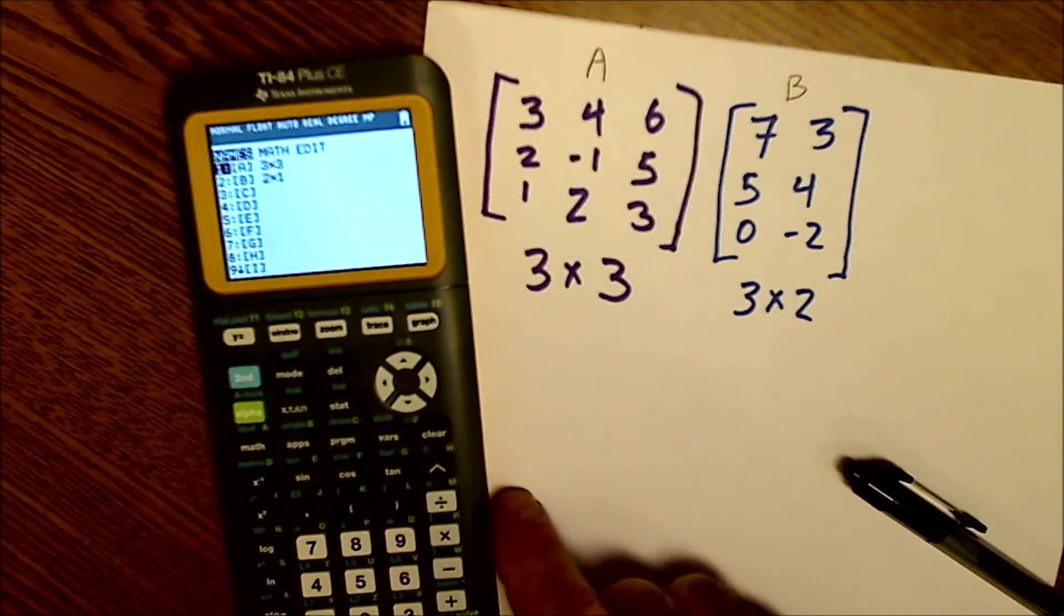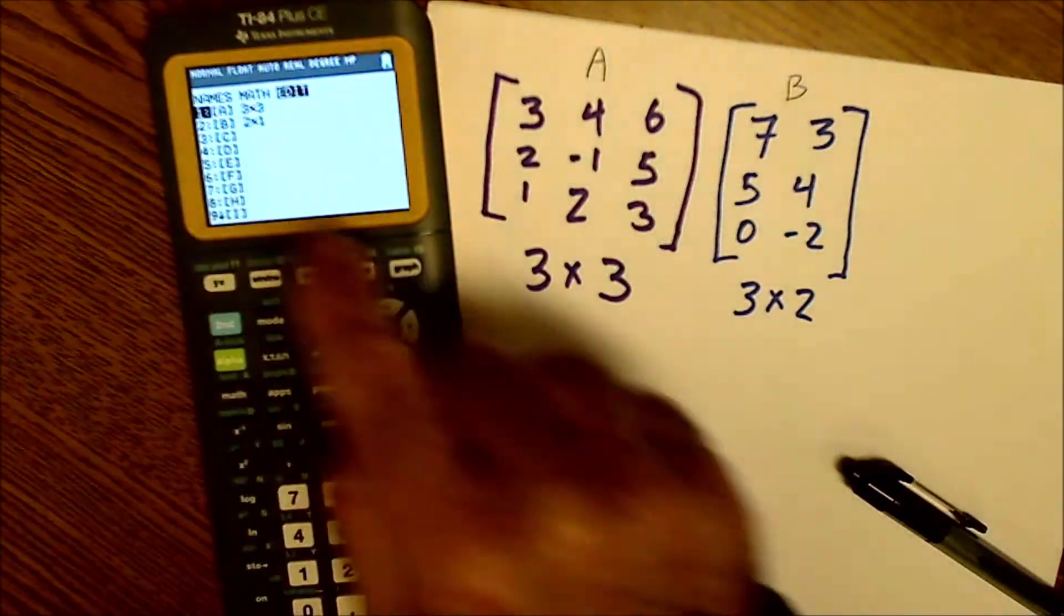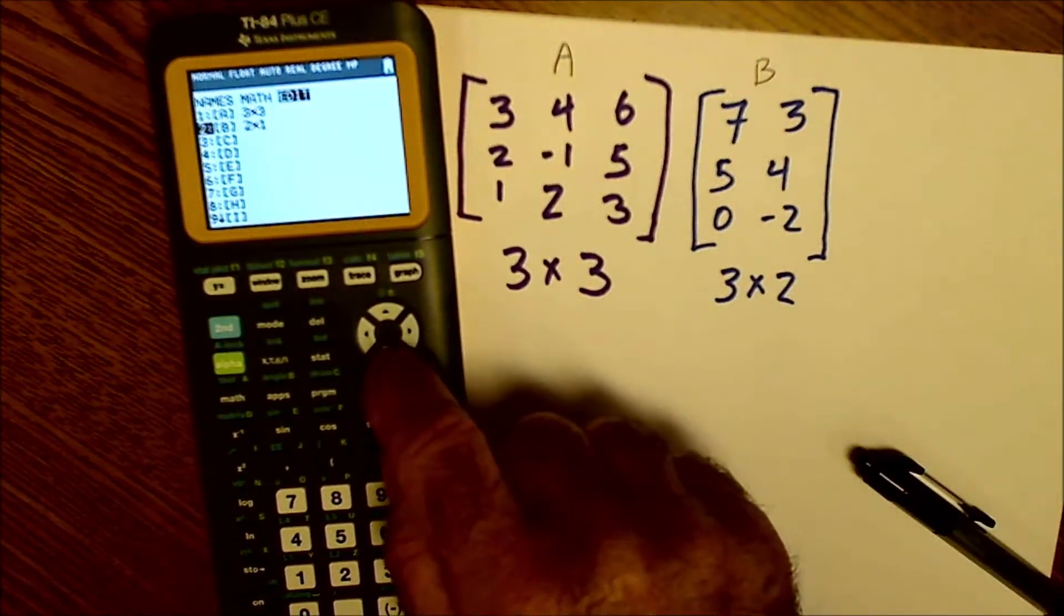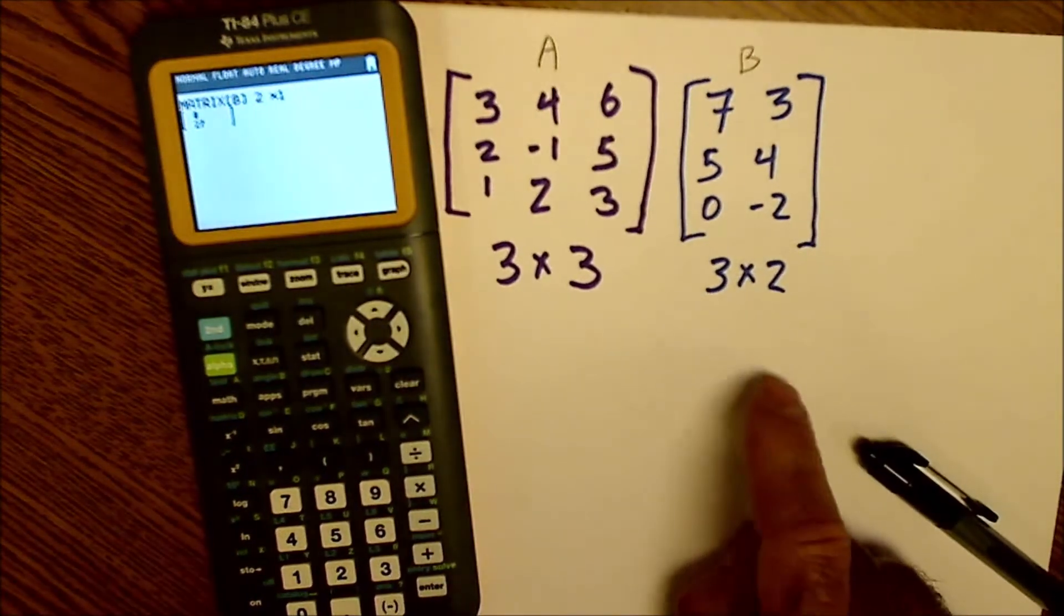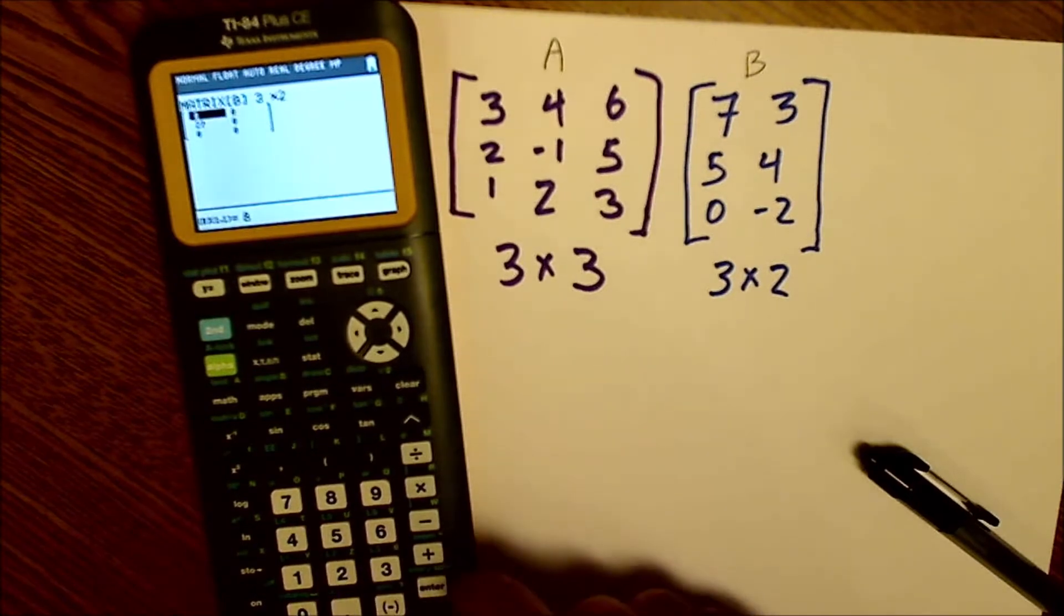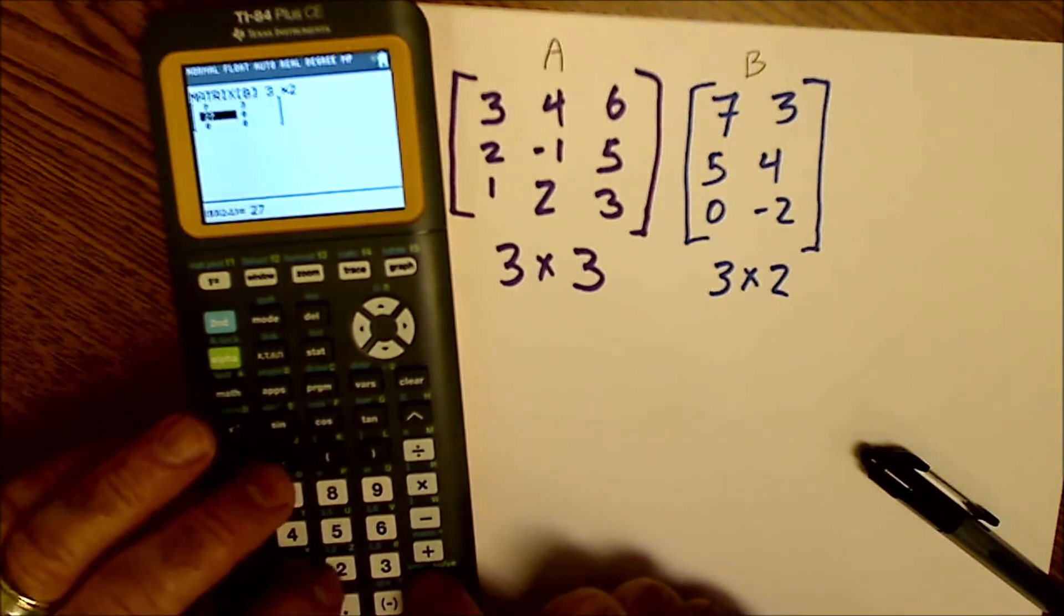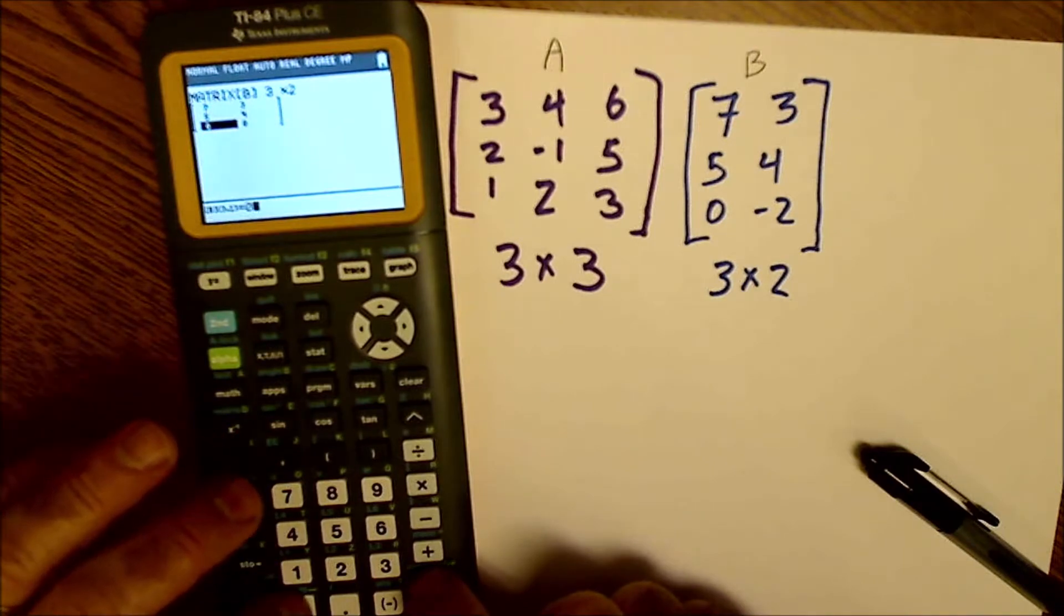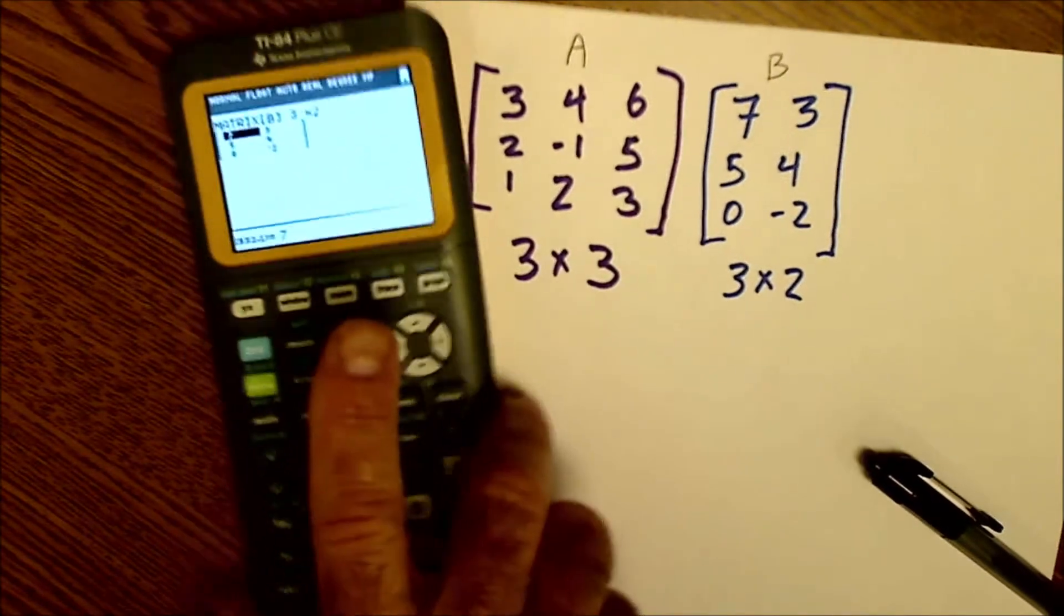Back to matrix. I'm going to edit a second matrix. I'll scroll over to edit, and then I want to enter matrix two, matrix B. So I'll scroll down to two and hit enter. Matrix B, three rows by two columns. So it's a three by two. Then I'll enter my elements: seven, enter, three, enter, five, enter, four, zero. Again, using the negative key down here. Negative two, enter. I'm going to quit.